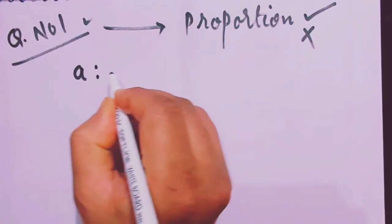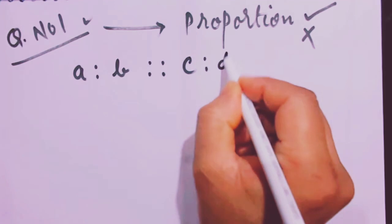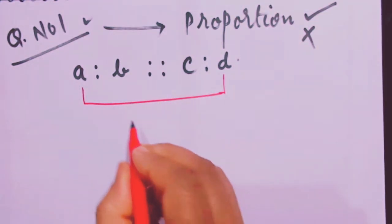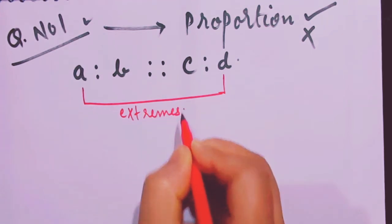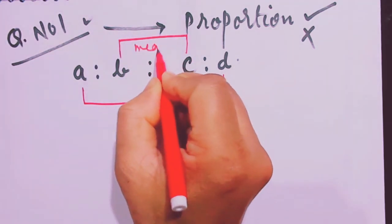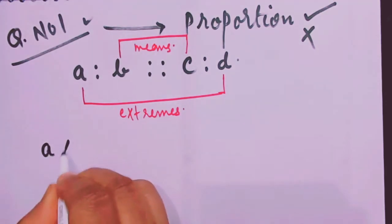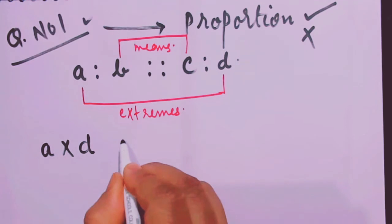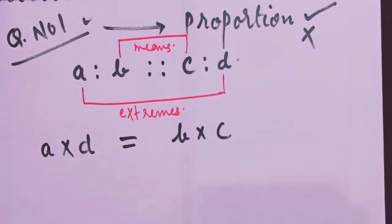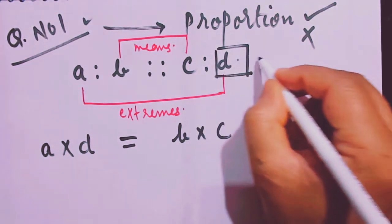When the ratio A is to B is proportional to C is to D, we revise that A and D — the outer two — are known as extremes, while B and C — the inner two — are known as means. Using the formula A into D equals B into C, if we need to find D, it is known as the fourth proportional.